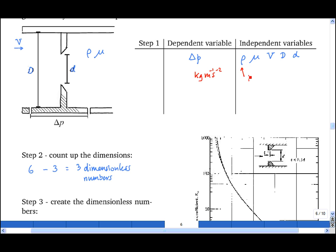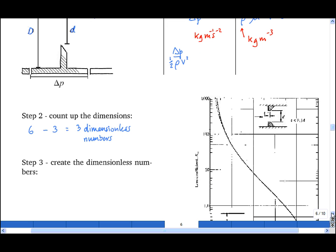The density has units kilograms per meter cubed. Therefore, Δp upon ρ has units of meters squared, seconds to the minus two. Obviously the way to get rid of meters squared, seconds to the minus two, is to divide by velocity squared. That exactly gets rid of all the units. Then I put in a half to give it the physical meaning of the dynamic pressure. So the first dimensionless number is the loss coefficient k defined as Δp upon ½ρV².